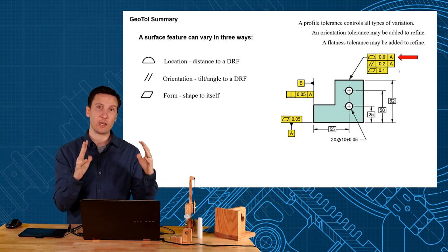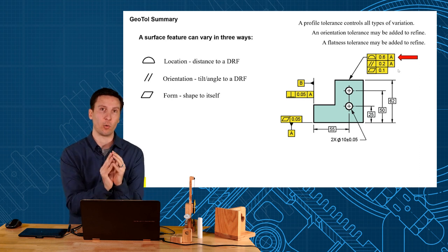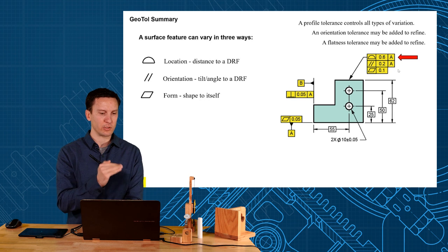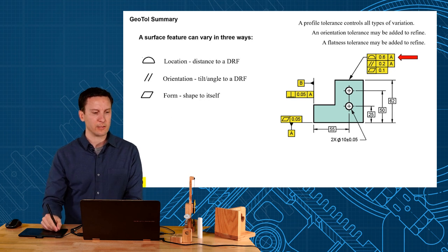So you could see the hierarchy of location then orientation then form. And that controls the variations on a surface. Location orientation and form refined as you go down.